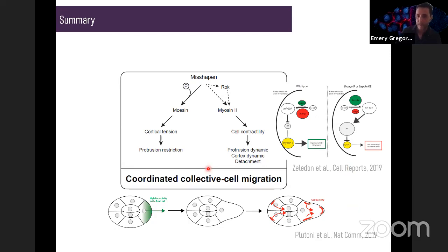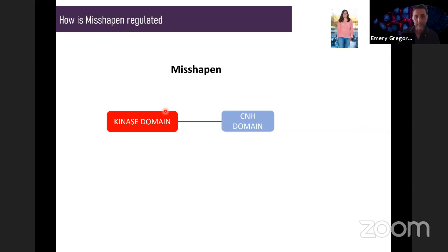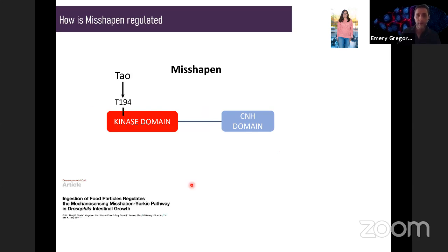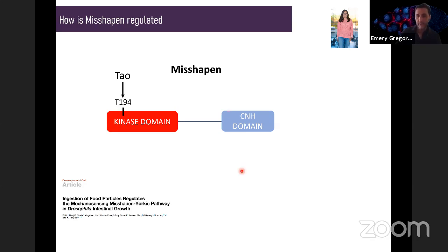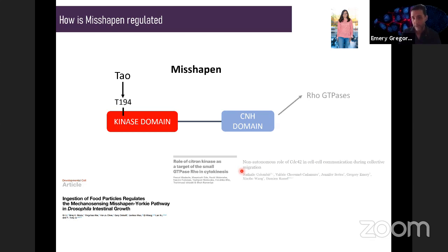We also want to understand what is upstream of misshapen. The misshapen kinase has a kinase domain and a CNH (citron homology) domain. Within the kinase domain there is a threonine 194 that was shown to be phosphorylated and activated by the kinase Tao — and if you remember, Tao was the second strongest hit of our screen and also had an impact on moesin phosphorylation. So we think Tao might be upstream of misshapen. The CNH domain is known to bind Rho GTPases, and GTPases such as Cdc42 have been involved in cell–cell communication to block protrusion formation, and Rap1 has been shown to regulate protrusion and contractility.